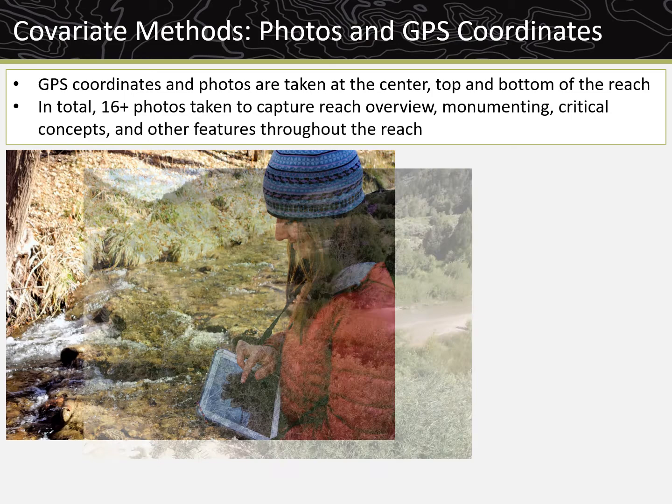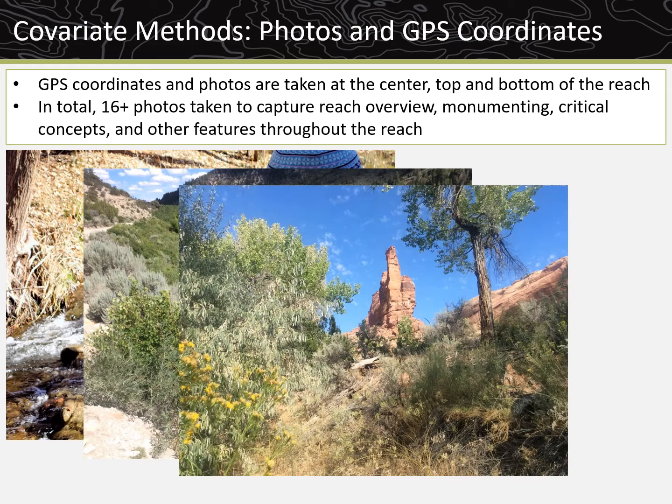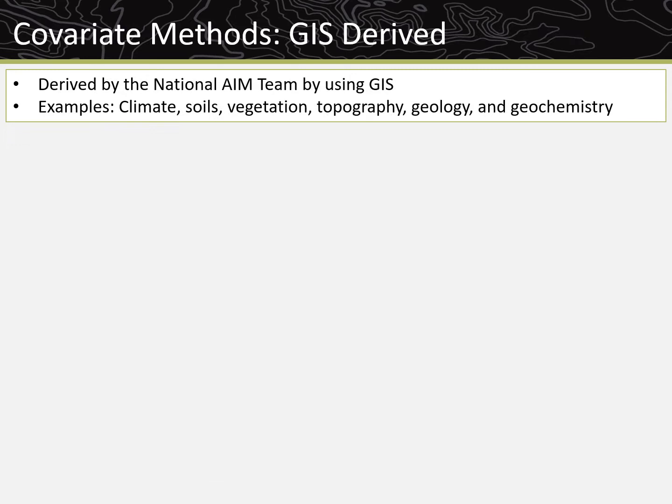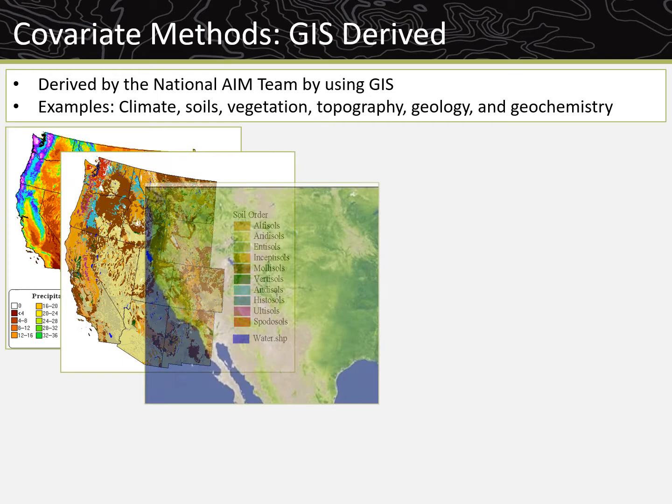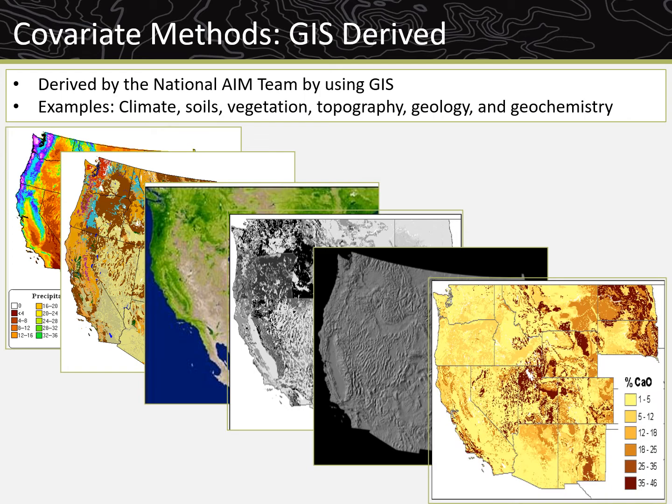GPS coordinates and photos are taken at the center, top, and bottom of the reach. A minimum of 16 photos are taken, including a reach overview, monument photos, and critical concept photos, among others throughout the reach. Several covariates for each stream are also derived by the National AIM team using GIS, including examples such as climate, soils, vegetation, topography, geology, and geochemistry.